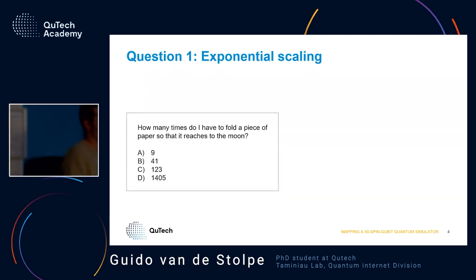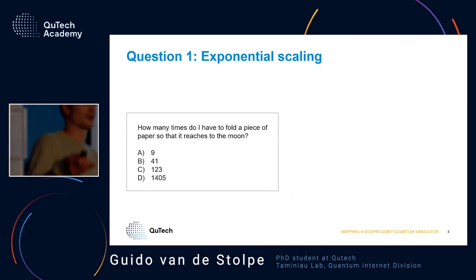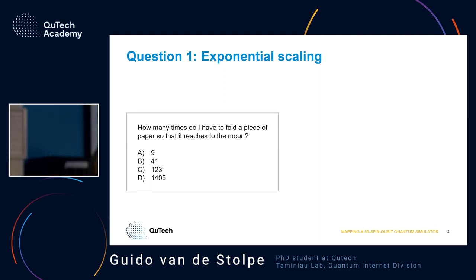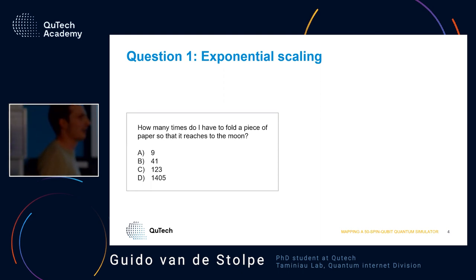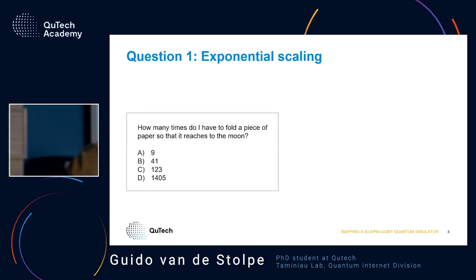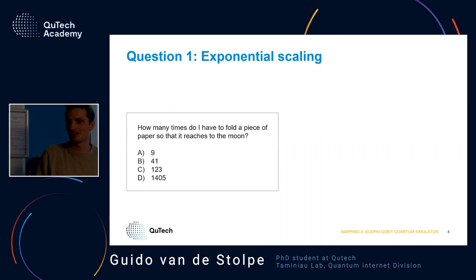I want to explain the power of exponential growth. If I have a piece of paper and fold it over and over, how many times do you have to fold that paper before the stack becomes so thick that it reaches to the moon? There are four answers and I have a Slido where you can scan the QR code and tell us what you think.